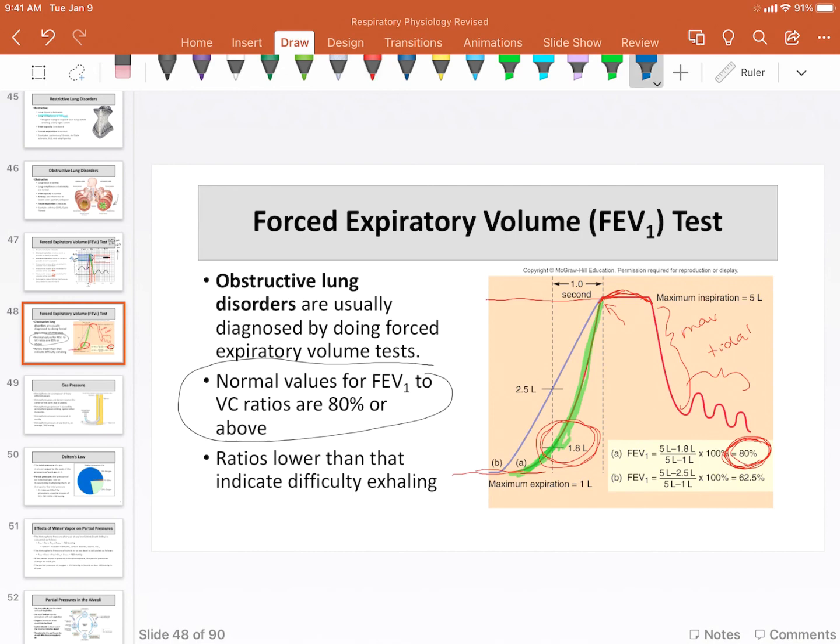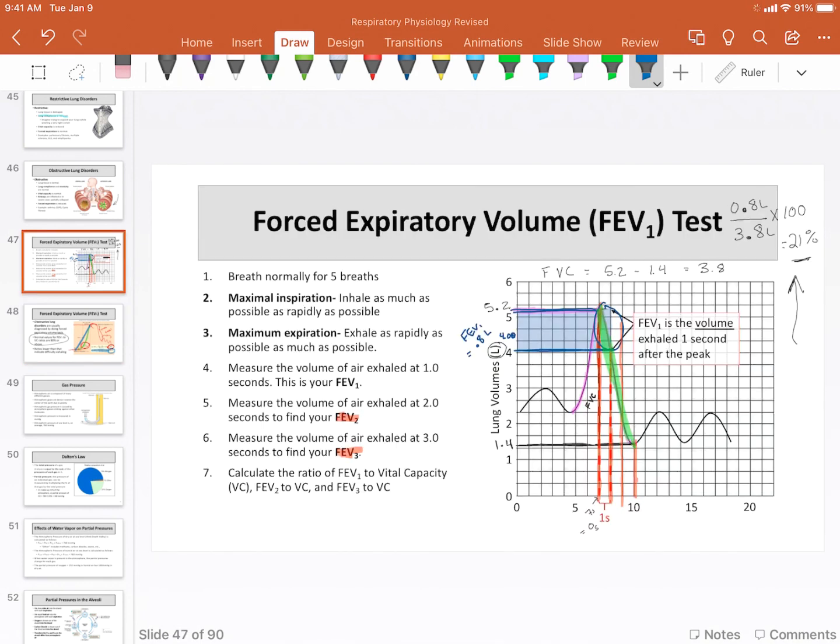Compare that to this blue line. This individual with the blue line is at 62.5%, and so this individual, individual B, whoever he or she is, would be diagnosed with an obstructive lung disorder. There would be additional tests that would need to follow but in essence that's it. This poor person, fortunately it's made up because you'd probably be seriously in trouble if your vital capacity was only, I mean your FEV₁ was only 21%, that would be like really really bad news.